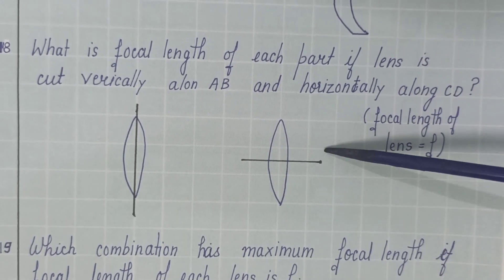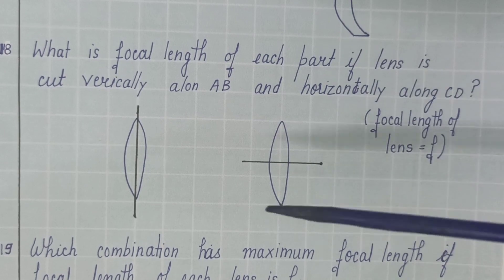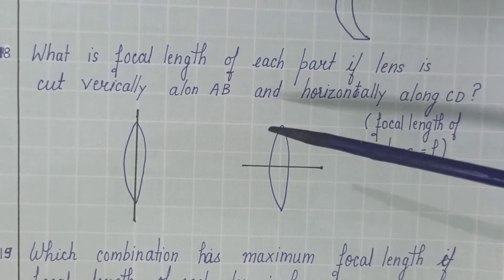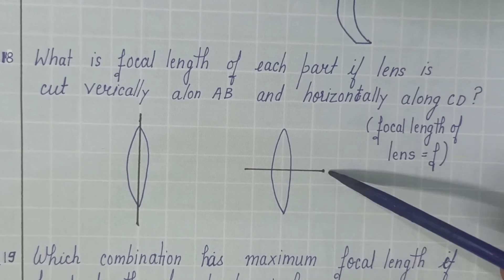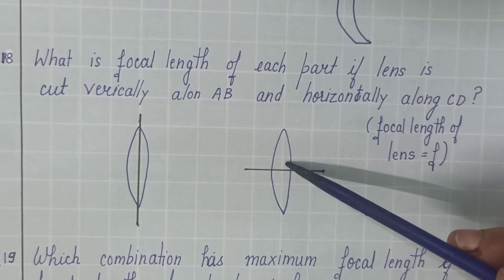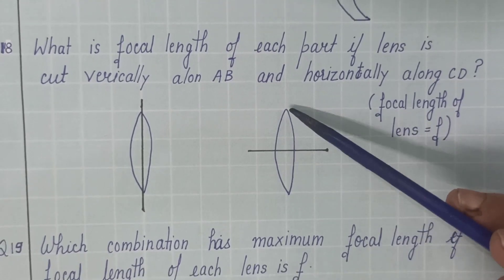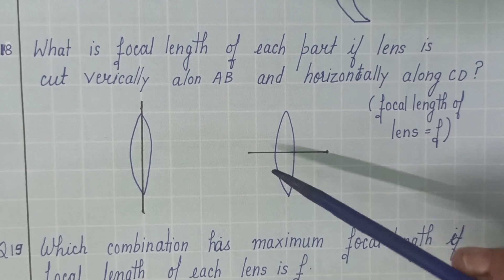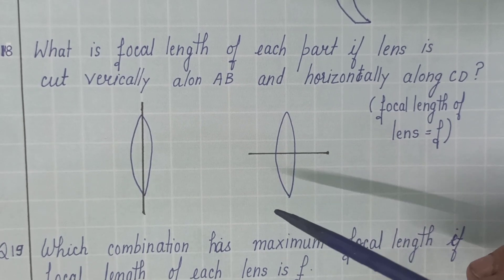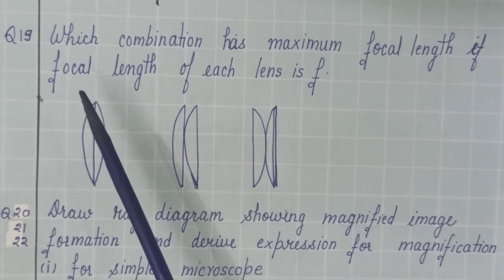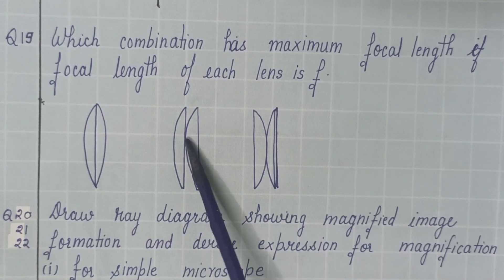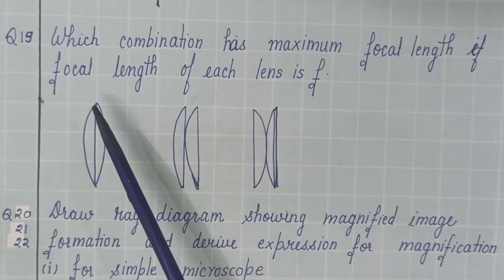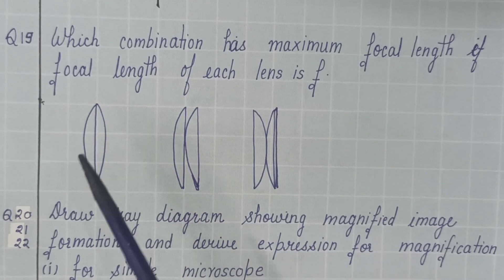Then this question is also very important that if you cut the lens along this line or along this line, then how many images you will get or what will be the change in the focal length? In this case, there will be change in focal length. But in this case, there will be no change in focal length. Only the half lens is used. So the intensity or brightness of the image will decrease.